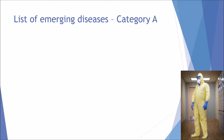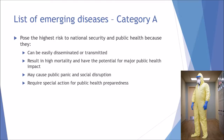Category A is the top category and these diseases require proper protective measures such as hazmat suits. They pose the highest risk to national security and public health because they can easily be disseminated or transmitted, spread rapidly, result in high mortality, and have the potential for major public health impact. They may cause public panic and social disruption, and require special action and strict preventative measures for public health preparedness.